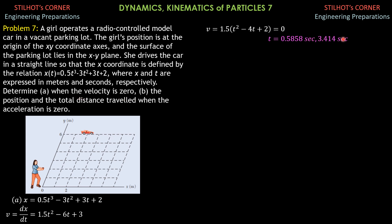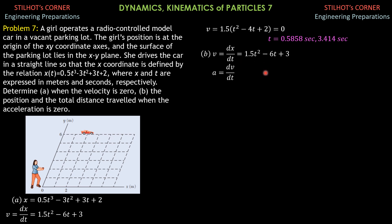For part b, acceleration is the derivative of velocity with respect to time: a = dv/dt = 3t minus 6. We equate this to 0: 3t minus 6 = 0, so t = 6/3, which gives t = 2 seconds.